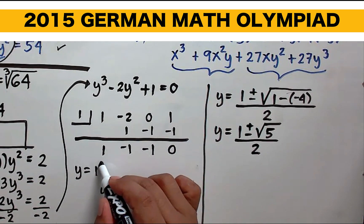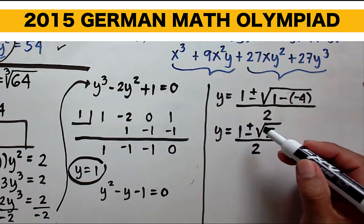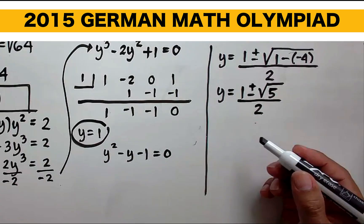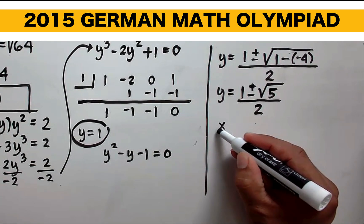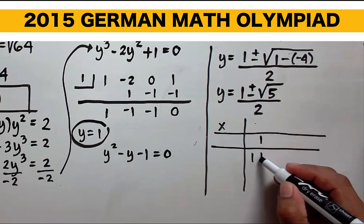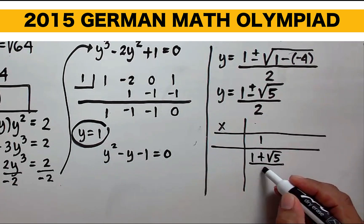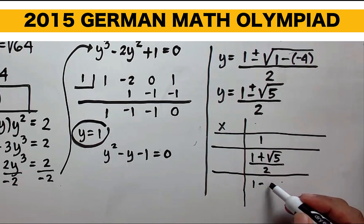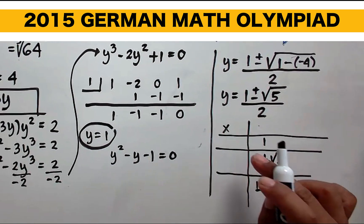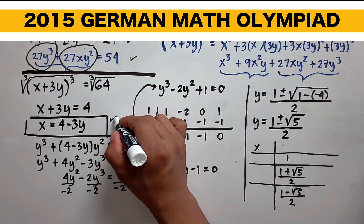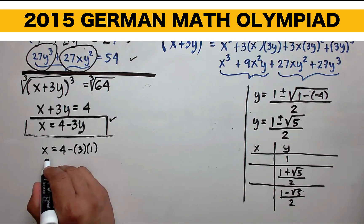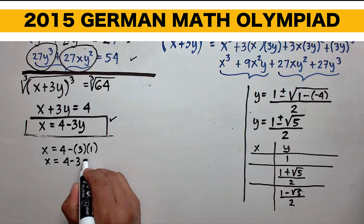So we now have three roots for y: y equals 1, y equals (1 plus the square root of 5) over 2, and y equals (1 minus the square root of 5) over 2. We still need to find the corresponding x values using x equals 4 minus 3y. When y equals 1, x equals 4 minus 3 times 1, which equals 4 minus 3, so x equals 1.